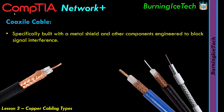Coaxial cables are mostly used by TV companies. If you look at the back of older TVs, there's a port for an antenna or cable TV connection — that cable is actually coaxial. You get many kinds of coaxial cables, some thin and some thick, and they come with many kinds of connectors. Connectors will be covered in a dedicated video for network cable, telephone cable, coaxial cable, and fiber cable connectors — covering them here would make this video too long.